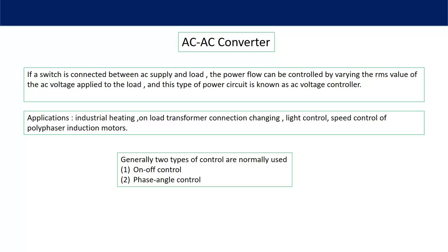Applications of AC voltage regulators include industrial heating, and on-load transformer tap connection changing — where we need to change the tapping of the transformer, and that can be easily done using this AC to AC converter. Other applications include light control, where the intensity of light can be controlled by controlling the voltage and thus the current, and speed control of polyphase induction motors.